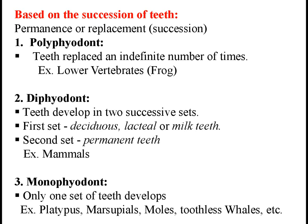The second one is diphyodont. Di means two, phyo means growth, odont means teeth. In most mammals, teeth develop during lifetime in two successive sets. Teeth of the first set are called deciduous, lacteal or milk teeth. They usually erupt after birth, and milk dentition has no molar teeth. Later, milk teeth are replaced in the adult by the permanent teeth, which are present throughout life. If permanent teeth are lost, they are not replaced naturally. Only two sets of teeth are found during the lifetime, hence this condition is known as diphyodont.